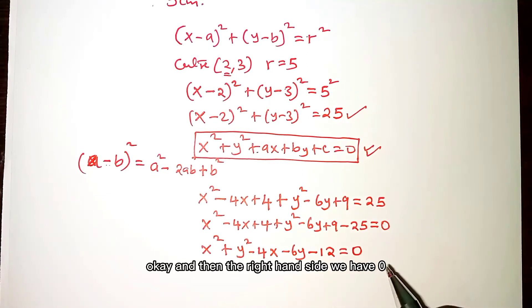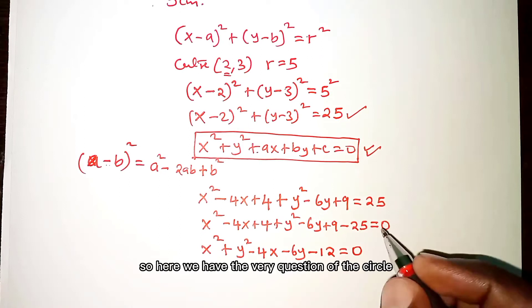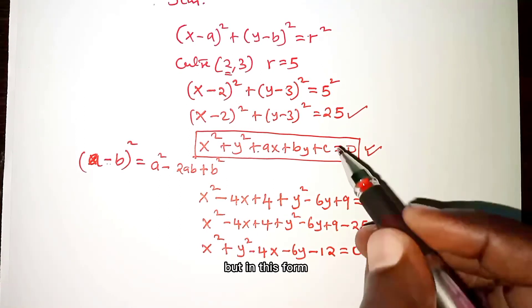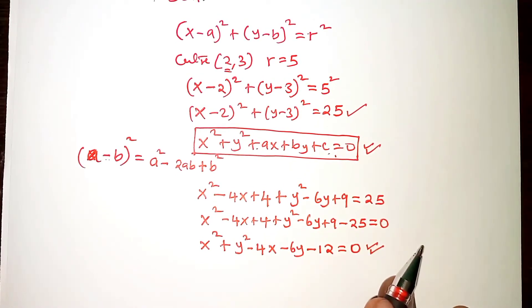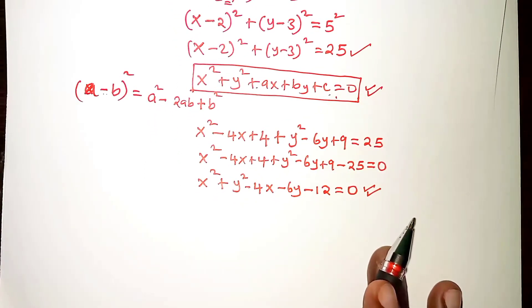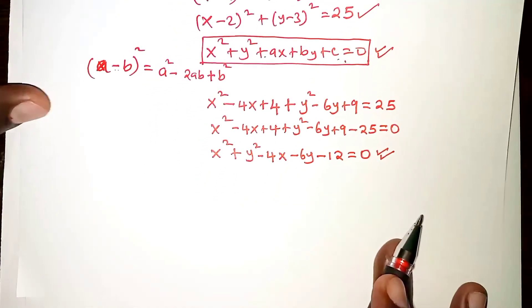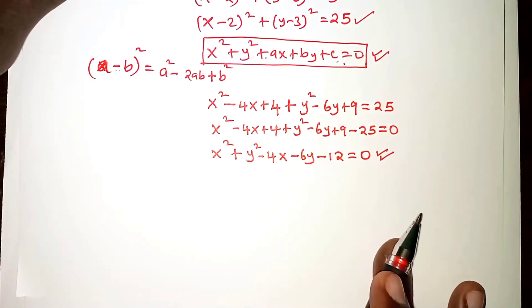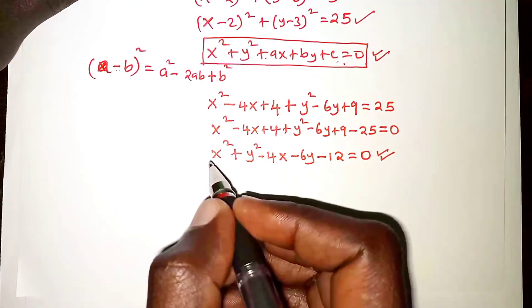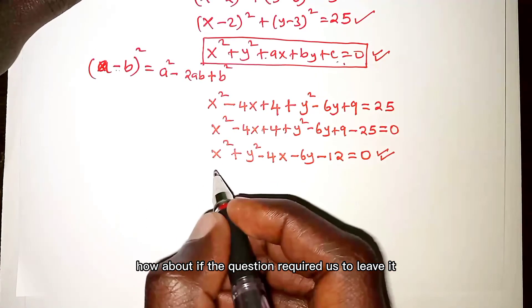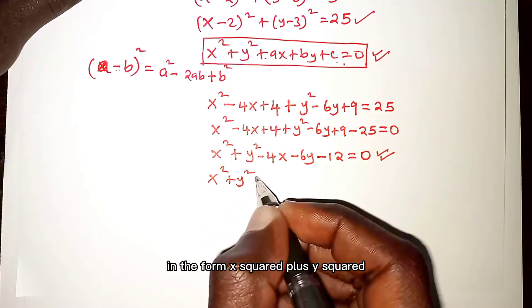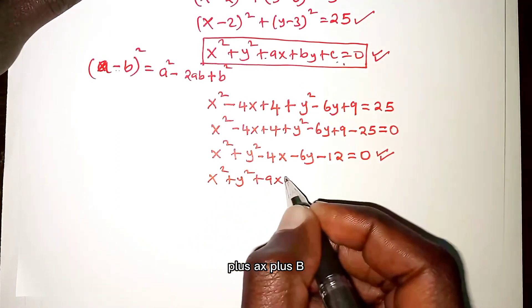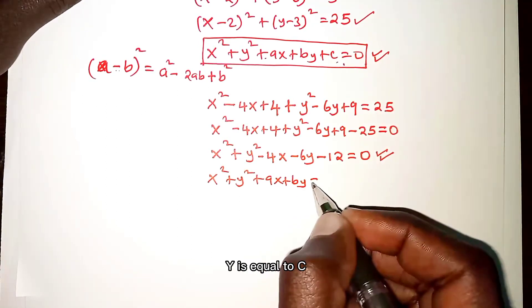So the equation of the circle in this expanded form is: x squared plus y squared minus 4x minus 6y minus 12 equals 0.